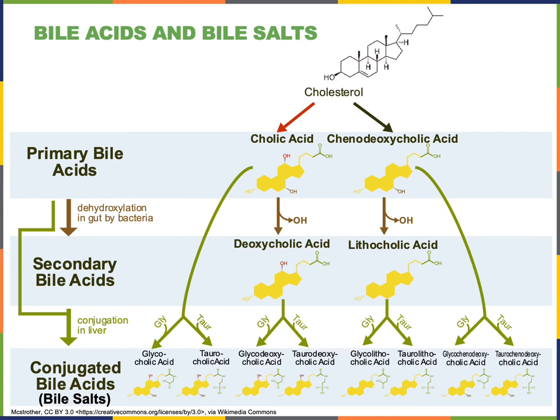Bacteria within the intestines can catalyze chemical reactions to modify the bile acids. A decarboxylation reaction is one of those reactions carried out by enzymes within gut bacteria. As we can see here, the conversion of the bile acid cholic acid to a secondary bile acid deoxycholic acid requires the bacteria within the gut. This just adds more variety to the number of bile acids and bile salts participating in the emulsification of lipids, facilitating chemical digestion and absorption of lipids.